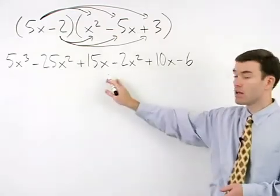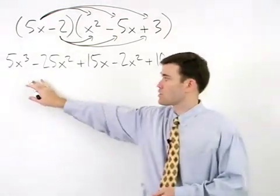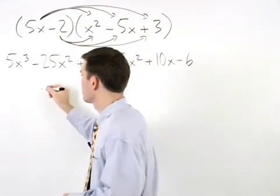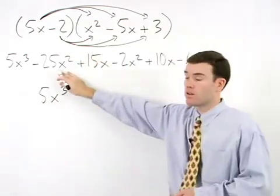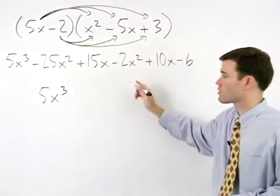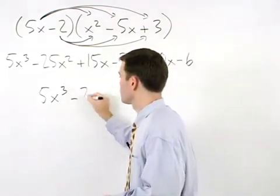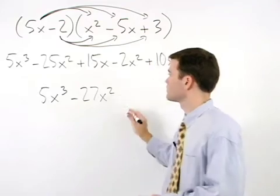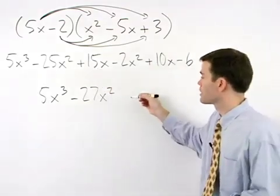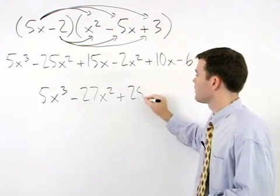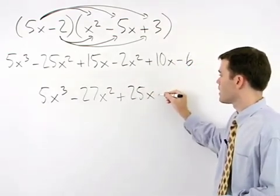Now we can combine like terms. So starting with 5x to the third, negative 25x squared minus 2x squared is negative 27x squared, positive 15x plus 10x is positive 25x minus 6.